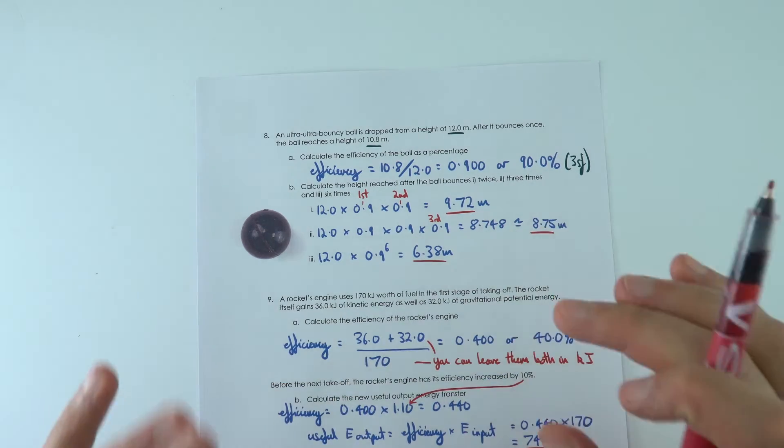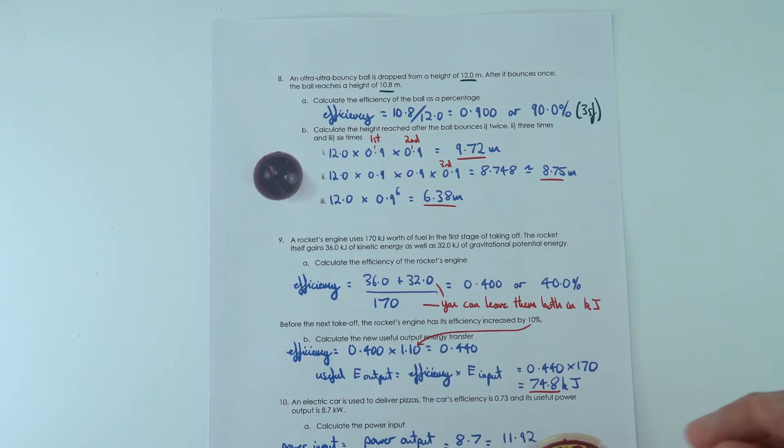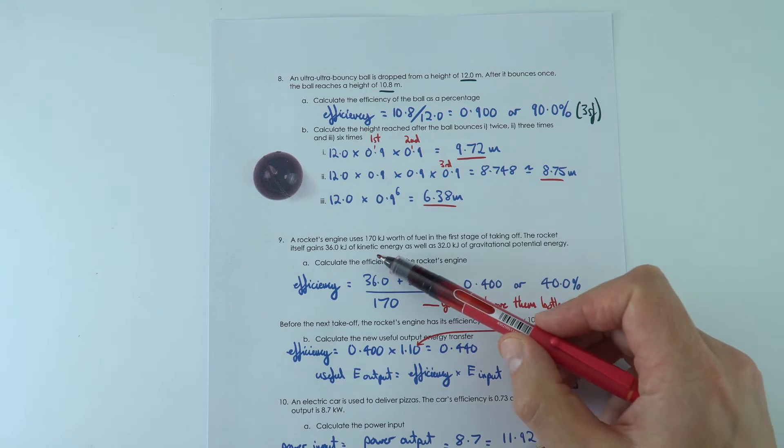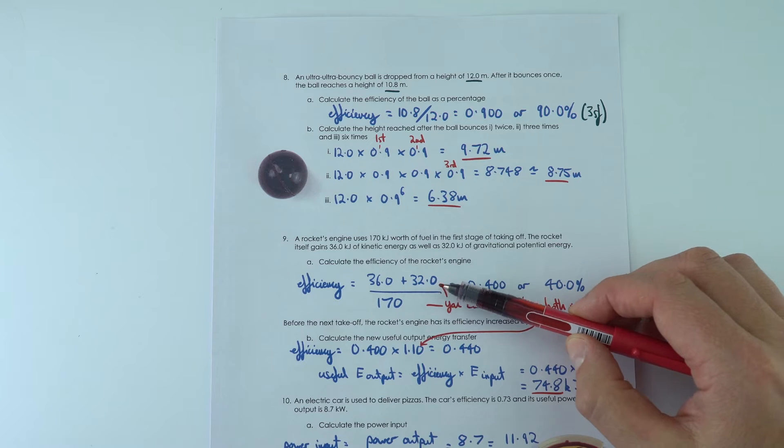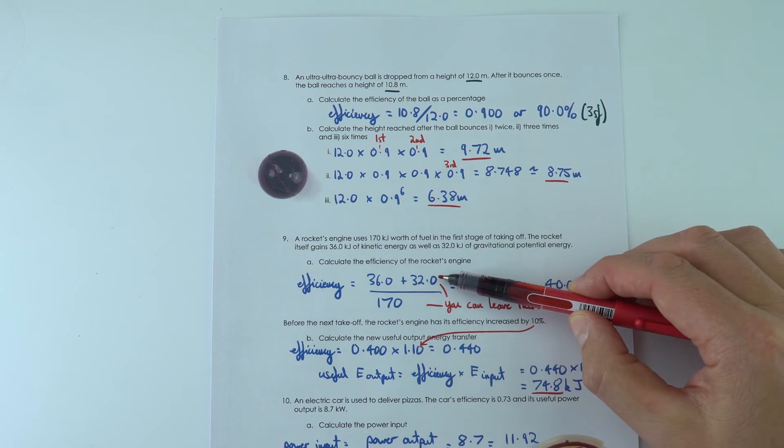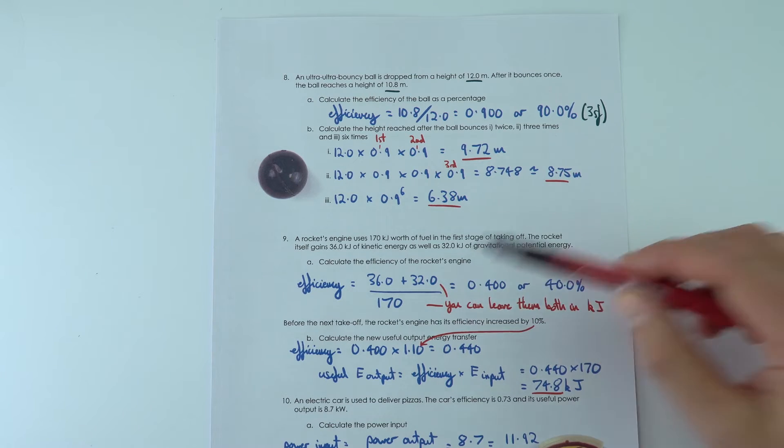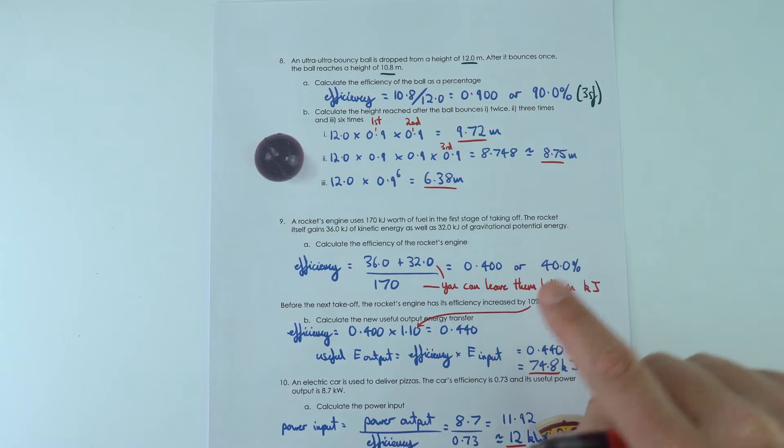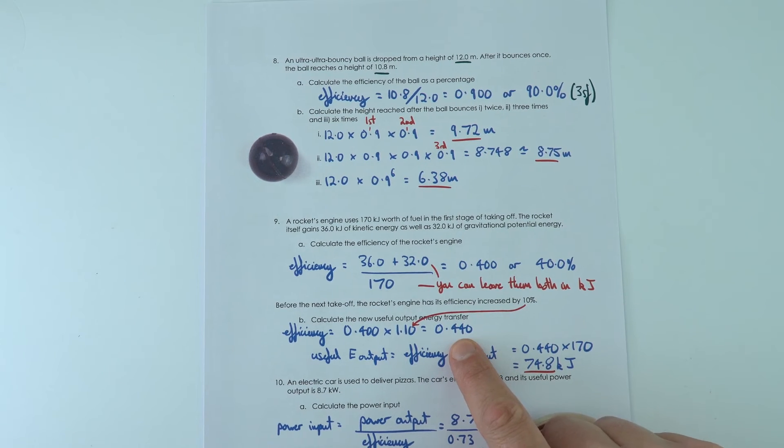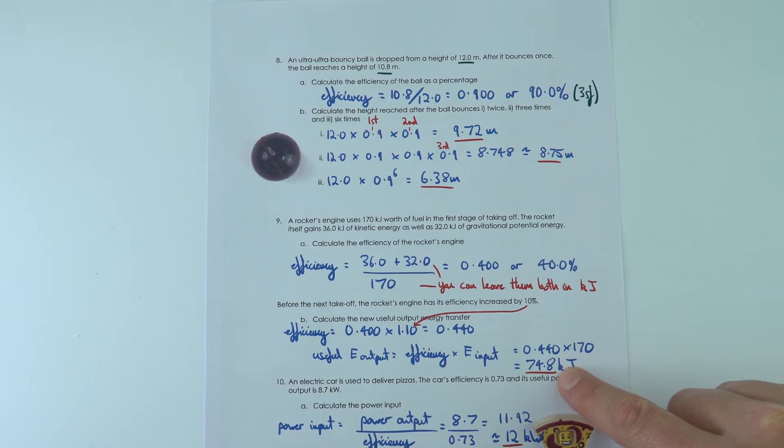The next one we're looking at the rocket engines, maybe on a rocket going out into space. And what I'm saying here is that the kinetic energy and the gravitational potential energy are the useful outputs. And because everything is in kilojoules and we're just looking at the ratio, you can leave both of these numbers in kilojoules rather than converting to joules. So it's a ratio of these two things, so it's 40% efficient.